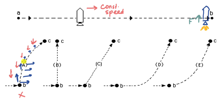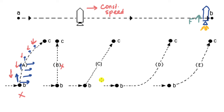Let's look at Option B. Option B says that after point B the rocket will start moving vertically upward. But we know the rocket already has a constant speed to the right. It would only make sense for the rocket to go straight up if it were stationary when the engine started. Since it's moving to the right with a constant speed, Option B is wrong.